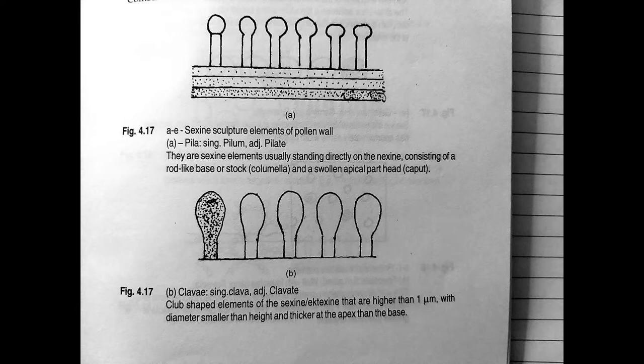Next we have clavate. These are club-shaped elements of the sexine or ectexine that are higher than one micrometer with a diameter smaller than height and thicker at the apex than the base. Clava is usually a club-like supratectile process where the length is greater than breadth, often found in some elements of Ilex.